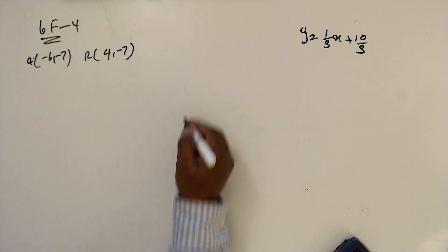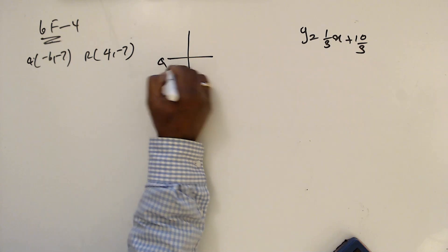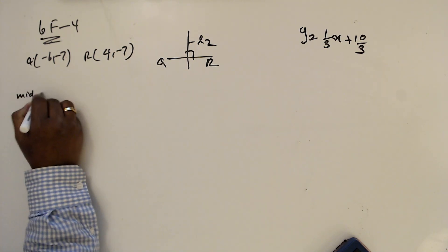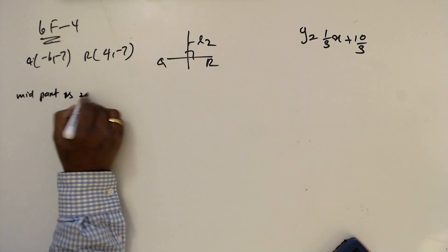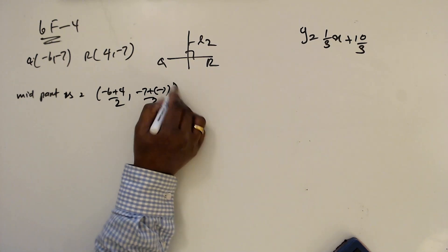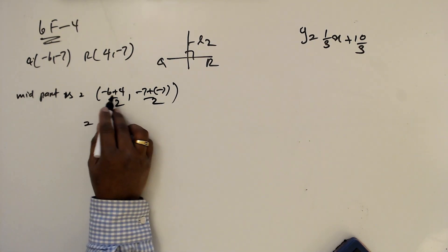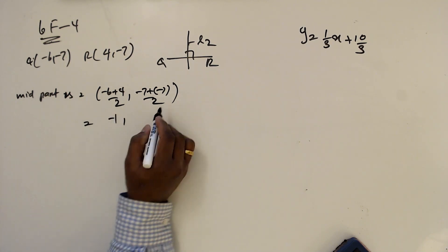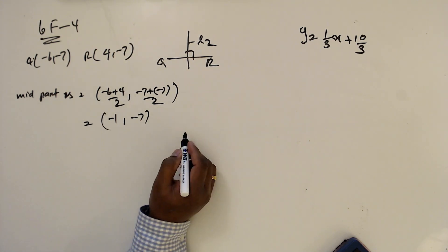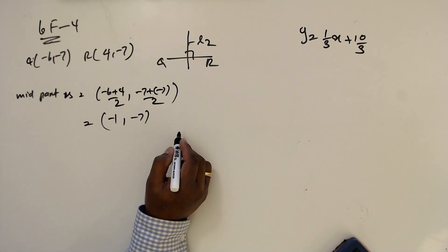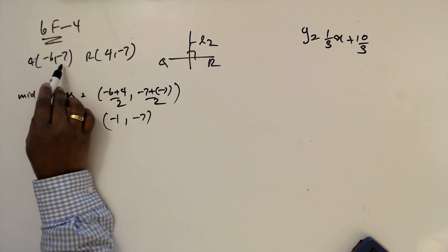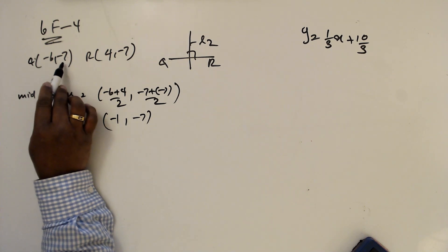Now we are going to find the perpendicular bisector of QR — this is L2. The midpoint is minus 6 plus 4 divided by 2, and minus 7 plus minus 7 divided by 2. This gives minus 2 over 2, which is minus 1, and minus 14 over 2, which is minus 7.